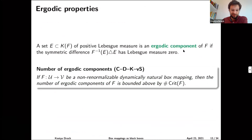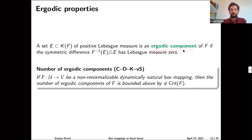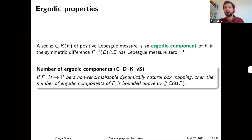The second item in the black box: we can actually bound the number of ergodic components for a non-renormalizable dynamically natural box mapping. Recall that a set E of positive measure is an ergodic component if its preimage equals the same set up to measure zero. A priori the number of ergodic components can be arbitrary or even infinite, but for non-renormalizable dynamically natural box mappings the number of ergodic components is bounded above by the number of critical points.